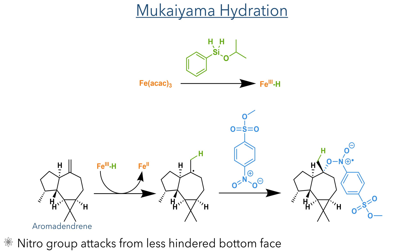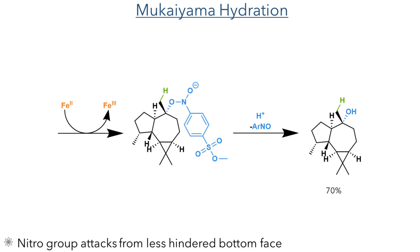which attacks from the less sterically hindered bottom face of the ring. This leaves a radical residing on the nitro group, which is then reduced by the iron-2 complex. Protonation of this species upon workup generates the target tertiary alcohol in a 70% yield as a single isomer.